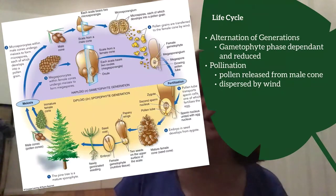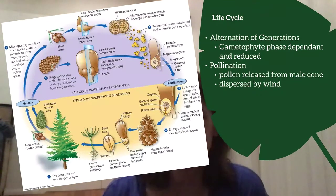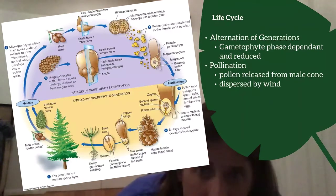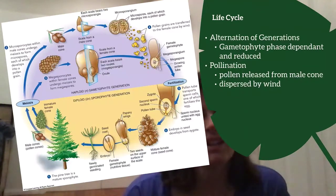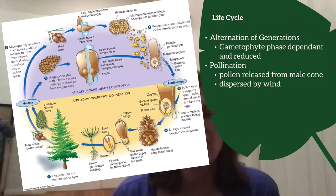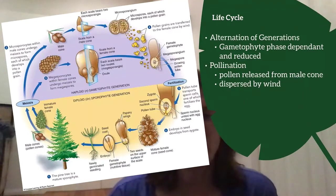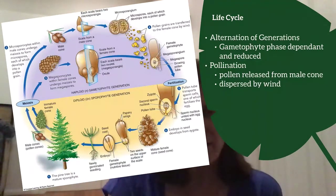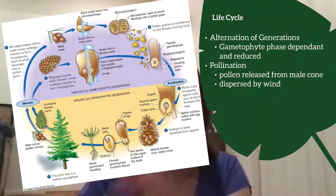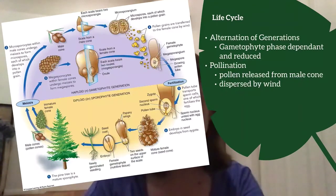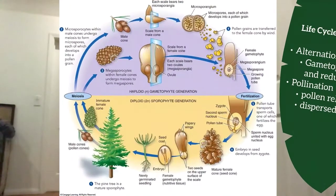That leads us to the life cycle. Plants all display alternation of generations. We need to understand the life cycle of gymnosperms, and we'll use the conifers as an example. The gametophyte phase is now dependent on the sporophyte and is much more reduced — it doesn't last as long, whereas the sporophyte lasts the entire life cycle. Remember the important distinction between pollination and fertilization.